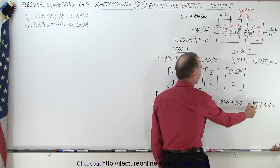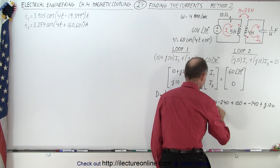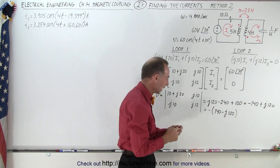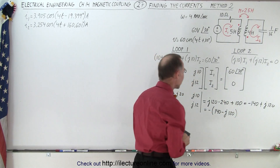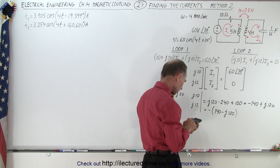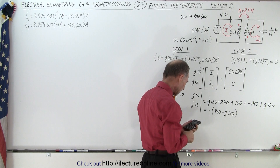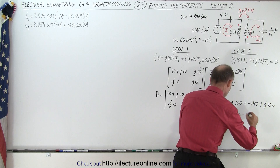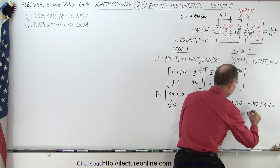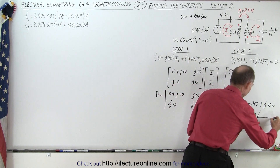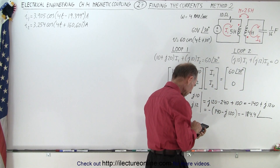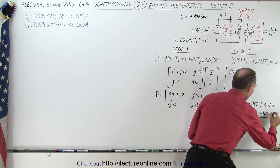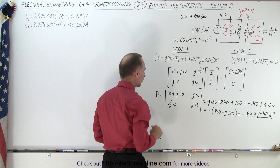We have minus 140 and plus J120. I don't like the negative in front of the number, so we write this as negative the quantity 140 minus J120, and later we can handle the negative sign by adding 180 degrees. The magnitude is the square root of 140 squared plus 120 squared, which gives 184.4. So this equals minus 184.4 with a phase angle of minus 40.6 degrees. That's the determinant of these four elements.